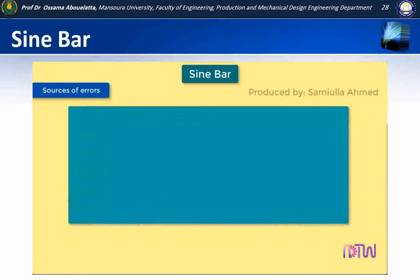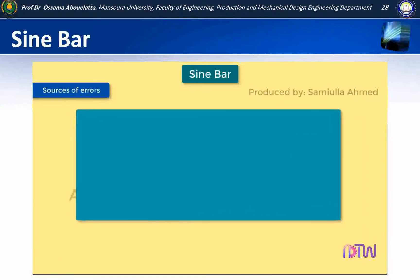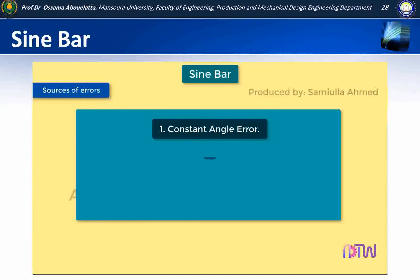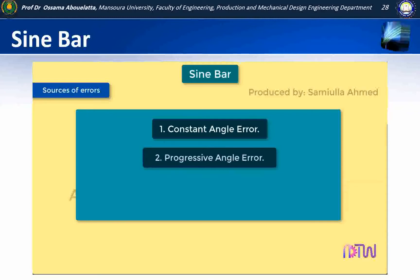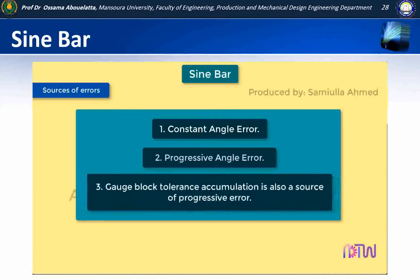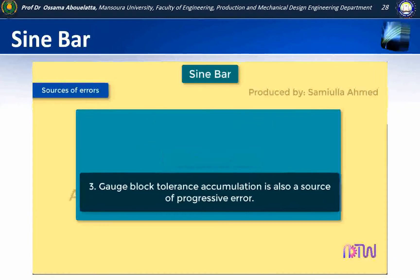Sources of errors in sine bar: 1. Constant angle error — this is caused if the working surface and the cylinder axes are not parallel. 2. Progressive angle error — this is due to the error in cylinder center distance. 3. Gauge block tolerance accumulation is also a source of progressive error.